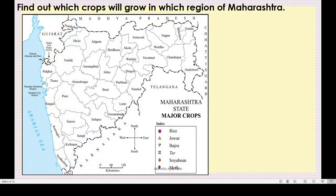Now, find out which crops grow in which region of Maharashtra. This is the map of Maharashtra and here in the index you can see rice, jawar, bajra, toor, soya bean, and moth. These are the major crops of Maharashtra. We will now go through some questions based on the table showing regions of rainfall and main crops.